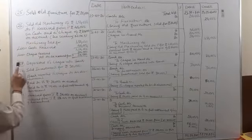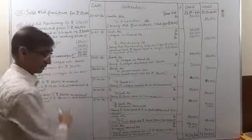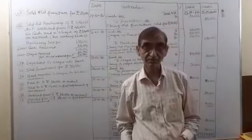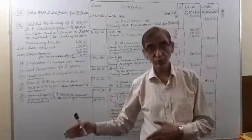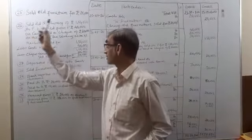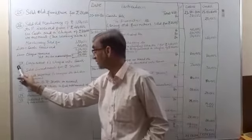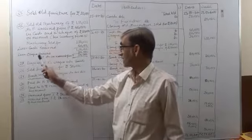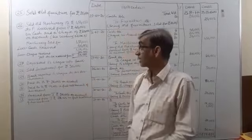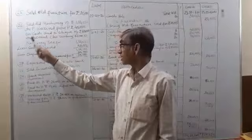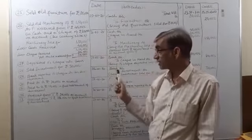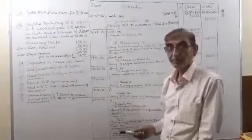The 27th transaction: deposited P's cheque into bank. Whenever a cheque is received and nothing is mentioned about its deposit into the bank in the entire question, it is assumed the cheque was deposited into the bank on the same date and the entry is passed through bank account. But here, the cheque was received on 26th January and deposited on 27th January. In such a case, when the cheque is received, it is shown as cheque-in-hand account. The day it is deposited, bank account is debited and cheque-in-hand is credited.